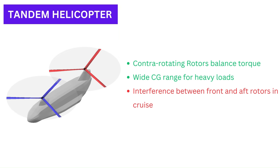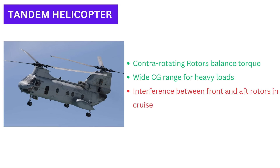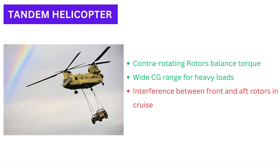The tandem helicopter is used to provide a wide center of gravity range for a cargo helicopter. This type has the problem of interference effects between the two rotors that reduces efficiency.